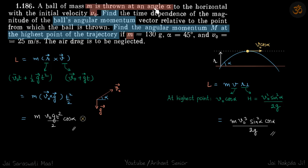A mass m is thrown at an angle alpha with initial velocity v naught. We need to find the ball's angular momentum at any given time t and also what is the angular momentum when it is at the highest point of its trajectory.